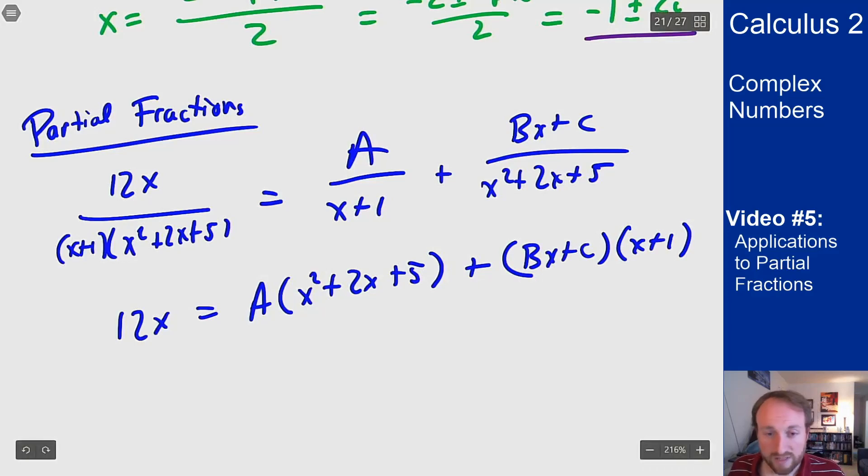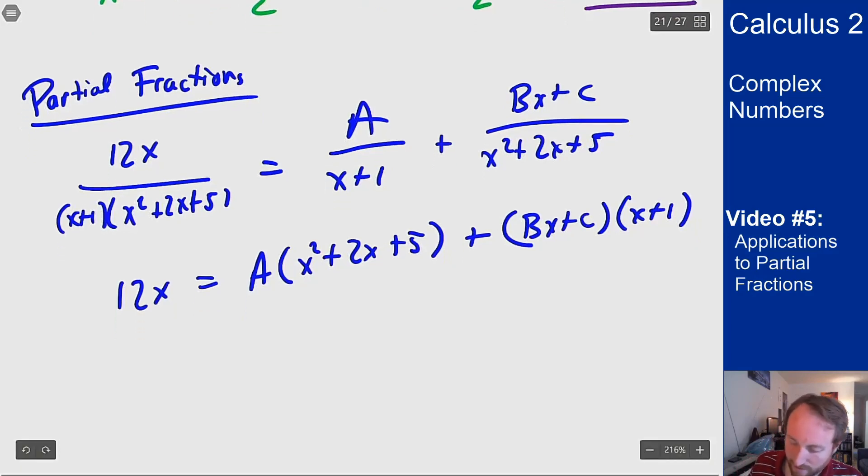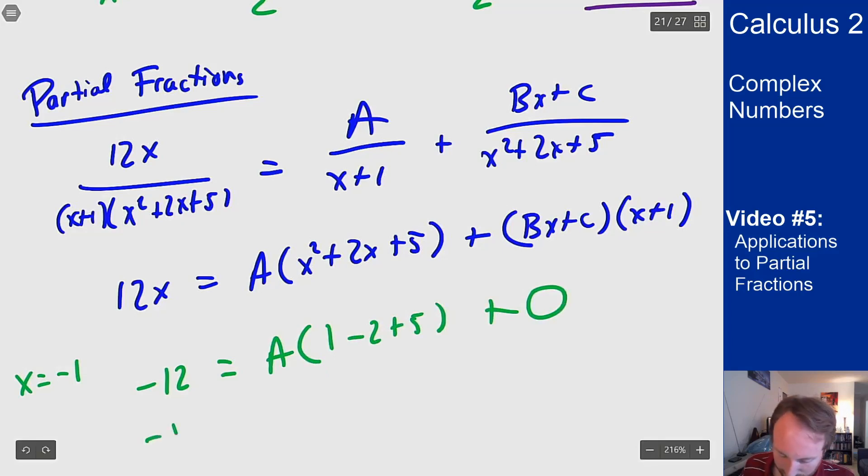The first choice that we've done before is plug in the solution to linear factors to make it all go away. I'm going to plug in -1 and when I do that I will get -12 on this side equals A times (1-2+5) plus 0 because x+1 goes away. This tells me -12 equals 4A so A is -3.